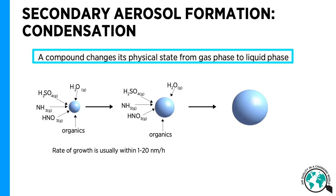Compounds are oxidized in our atmosphere, and when oxidized, they usually become heavier, and thus prefer the liquid phase over the gas phase, and they condense onto existing aerosol particles. Condensation is in fact the main path for aerosol particles to grow in size, and growth up to a few hundred nanometers by condensation is possible. Evaporation is the opposite of condensation, and evaporation is thus able to shrink aerosol particles.